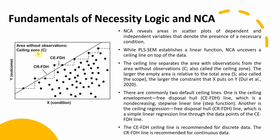There are two default ceiling lines. The Ceiling Envelopment Free Disposable Hull line (CE-FDH) appears as a stepwise staircase line. The Ceiling Regression Free Disposable Hull line (CR-FDH) is a simple linear regression line through the upper boundary of the data. CE-FDH is recommended for discrete data, while CR-FDH is recommended for continuous data.